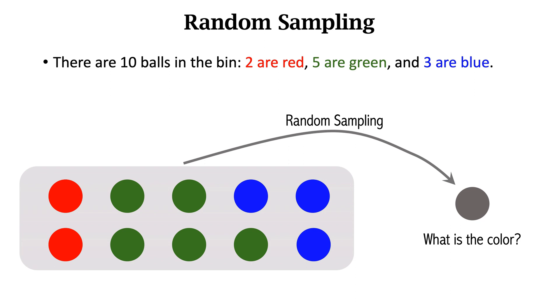But I know the ball can be red, green, or blue. I also know the probabilities of the three colors. Before I open my eyes, the color is a random variable. When I open my eyes, the randomness disappears, and I observe the color. This is one trial of random sampling.